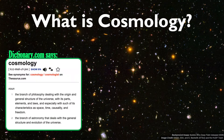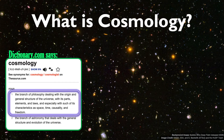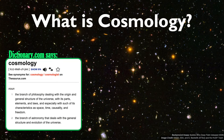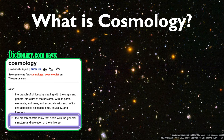According to dictionary.com, which gives us two separate definitions, cosmology is either the branch of philosophy dealing with the origin and general structure of the universe, with its parts, elements, and laws, and especially with such of its characteristics as space, time, causality, and freedom. Cool, we all understood that. Or, more simply, it is the branch of astronomy that deals with the general structure and evolution of the universe.